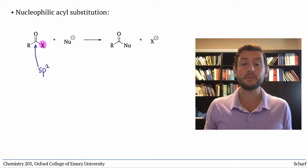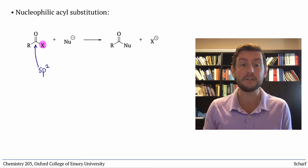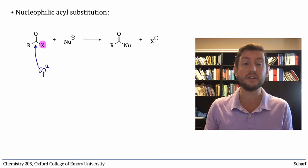Leaving groups attached to sp3 hybridized carbon atoms, usually halides, can also be substituted by nucleophiles, but the mechanism is necessarily different. There's no pi star CO to attack.